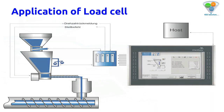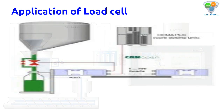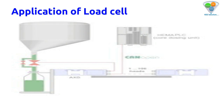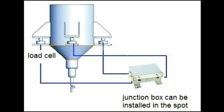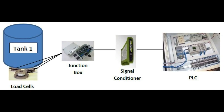Another example is for conveyor feeding systems — we can attach a recorder or touchscreen or set a value. For the feeding conveyor, we can also use a screw conveyor with a tank to control the material or level.